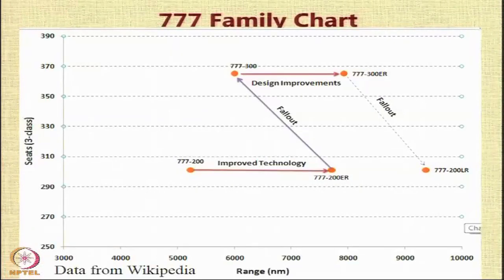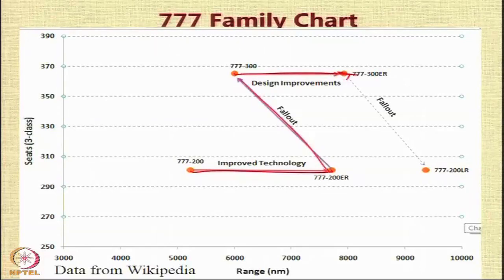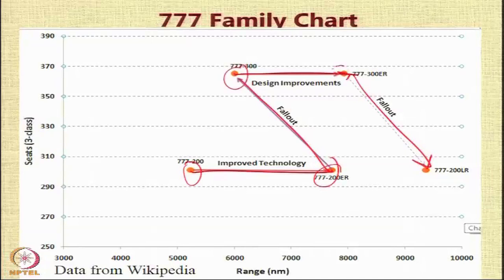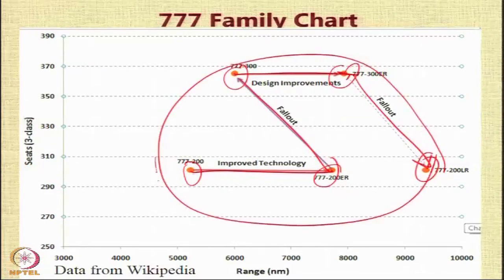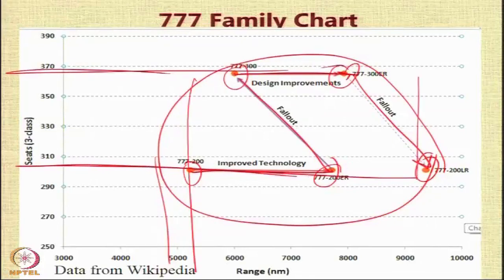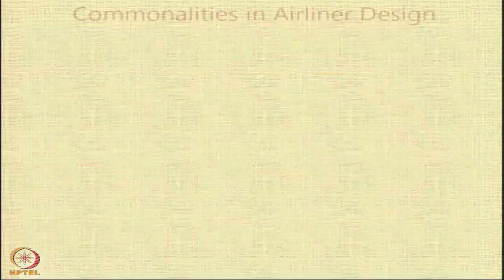Similarly, the Boeing 777 family addresses multiple market segments — one aircraft is able to handle a large range of capacity and range requirements through stretching and shrinking, addressing four or five different markets.